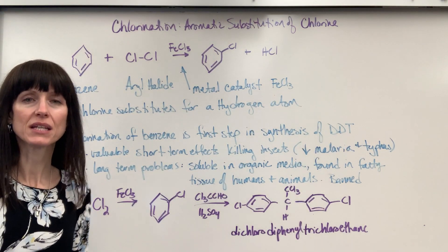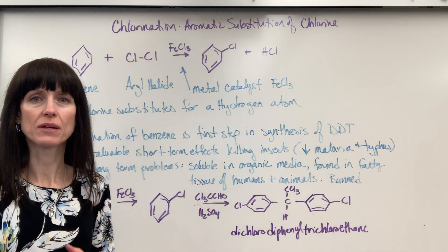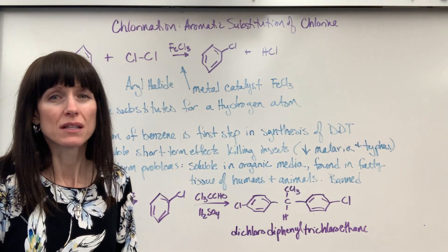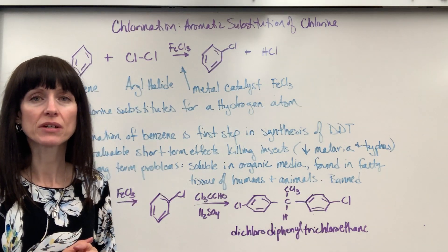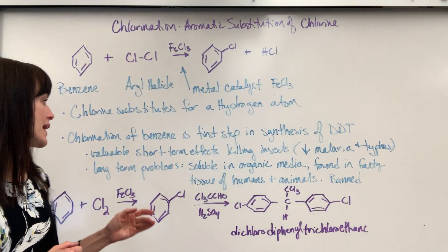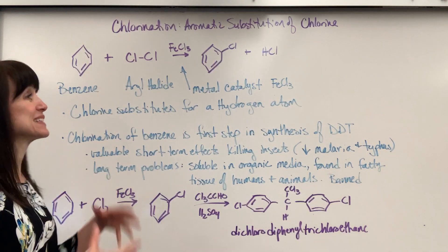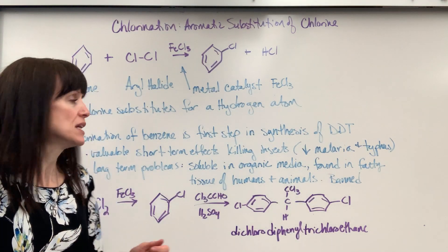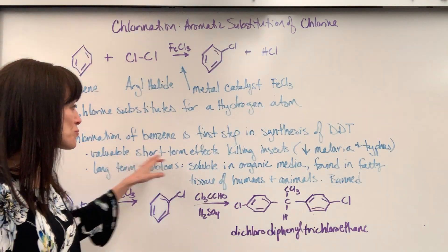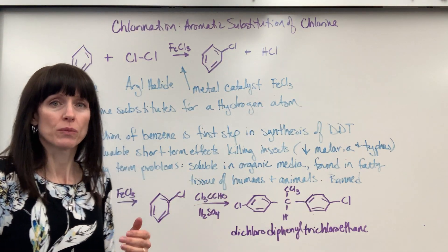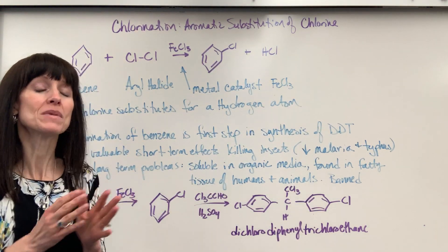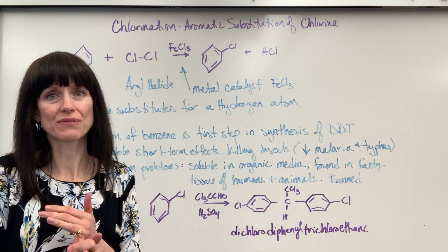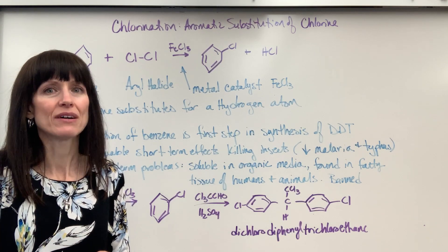Chlorination of benzene is the first step in producing DDT. You may have heard of DDT — a little bit of backstory. It had a significant positive short-term effect. It does a great job of killing insects, which saved millions of lives by decreasing malaria and typhus.